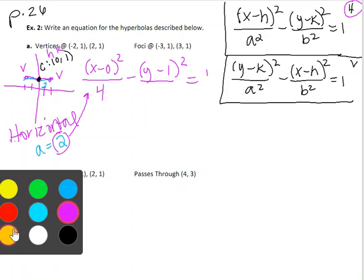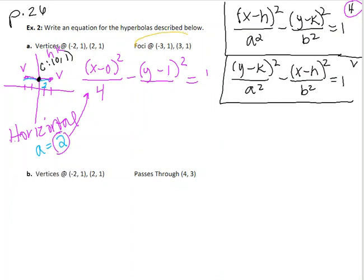Then I'm going to go ahead to the foci. They're telling me the foci are at negative 3, 1 and at positive 3, 1. The only other piece of information that helps me with is the value of c. c is the distance from the center to one of those foci, which is 3. So I know c is 3.